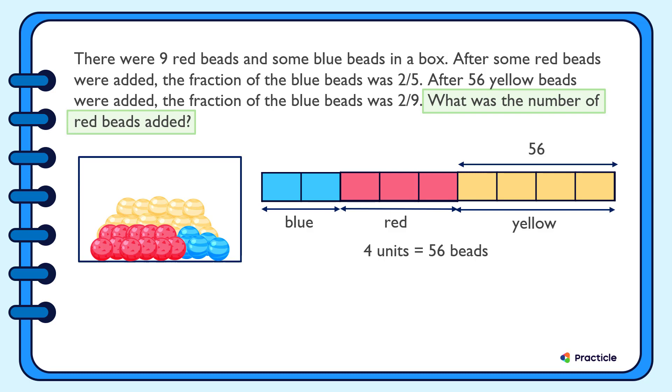Let's do that. First, we are going to divide 56 by 4 to find the number of beads that one unit represents. 56 divided by 4 is 14. Do you get that? Then how many units represent the red beads? Yes, we have 3 units. So let's multiply 14 by 3. And this gives us 42.